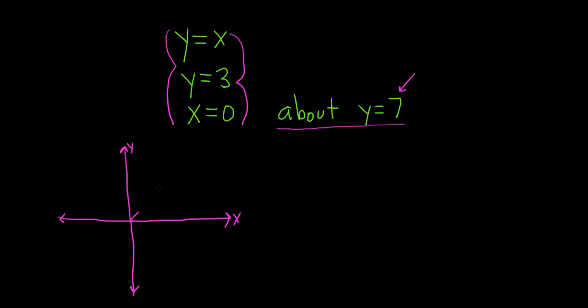So y equals x looks like this, y equals 3 looks like this, and then x equals 0 looks like this. So let me just do them over here. So this is y equals x, and then y equals 3 is a horizontal line like this, and then x equals 0 would be a vertical line right here.